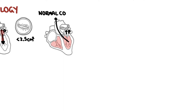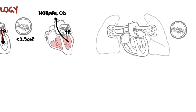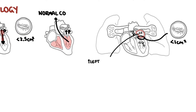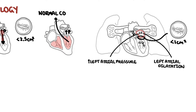When the mitral valve becomes significantly narrow — less than 1 cm² — this is critical stenosis. At this stage, the atrial pressure must be at least 25 mmHg to maintain cardiac output. In mitral stenosis, as left atrial pressure increases and the left atria continues to dilate, blood will pool backwards, causing pulmonary hypertension.